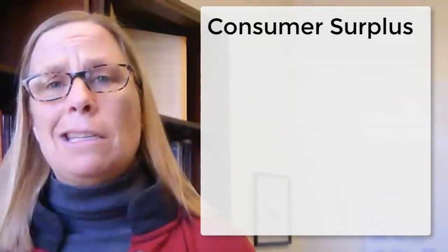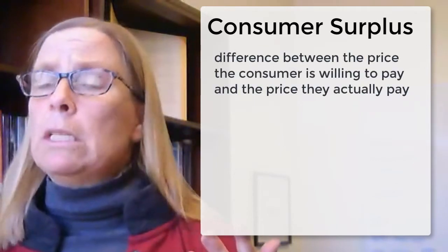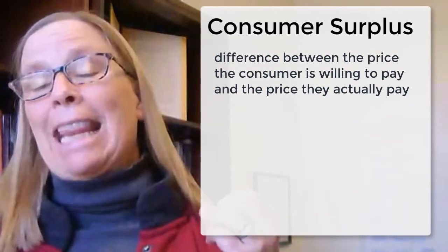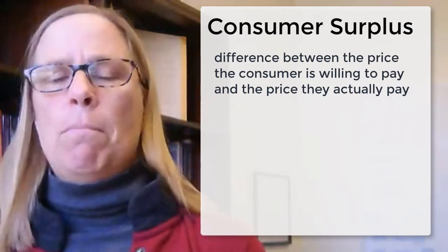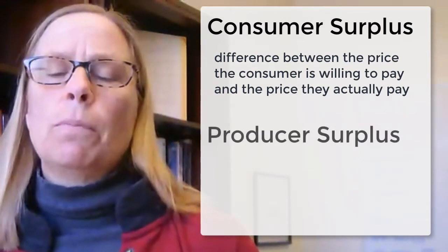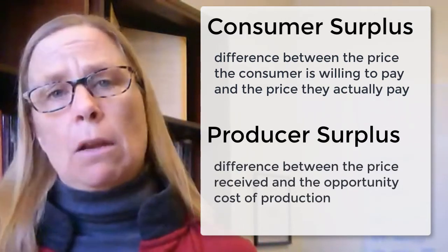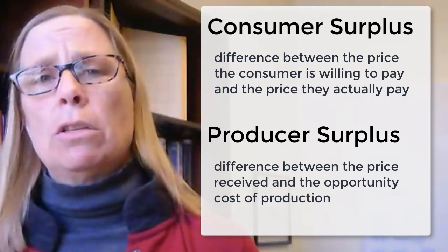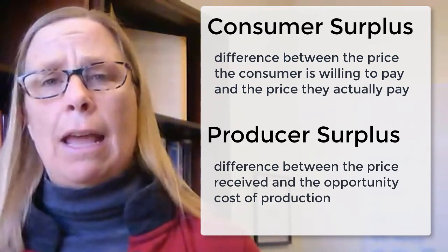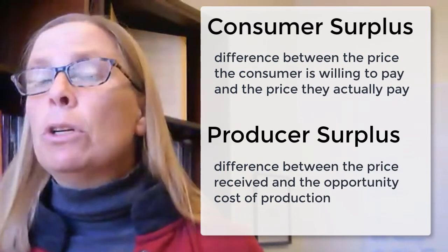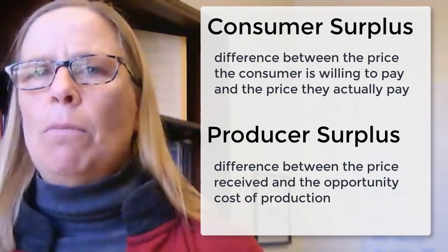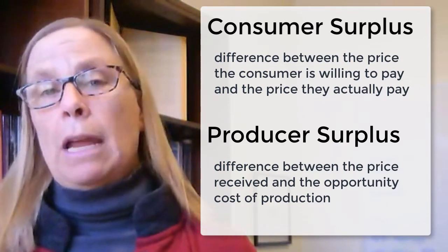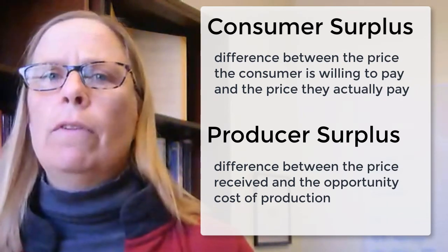Consumer surplus is the difference between a consumer's willingness to pay for an item and the price they actually pay — it's the gain that they get from making a trade. Producer surplus is the difference between the price that they receive for an item and the opportunity cost to them of producing or providing that item. It's similar to profit, but not the exact same thing, because it's really the difference between price and marginal cost, while profit takes into account fixed costs.